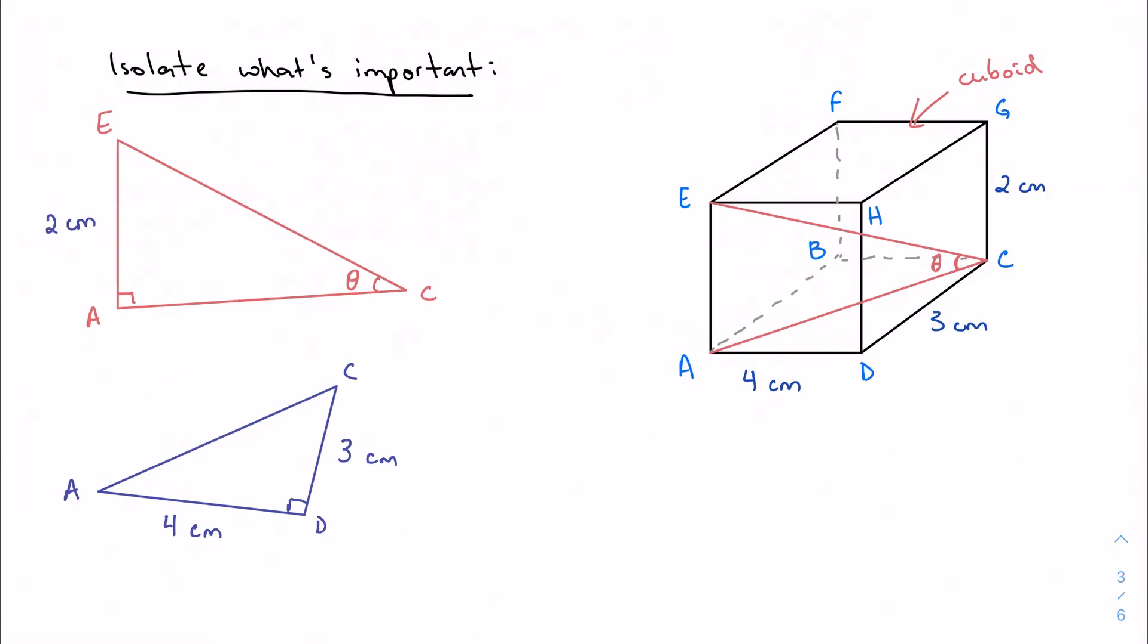By the Pythagorean theorem, AC is five centimeters. So, again, I did that from the Pythagorean theorem. So, AC is five centimeters, so I can move that back over here. AC is five centimeters.